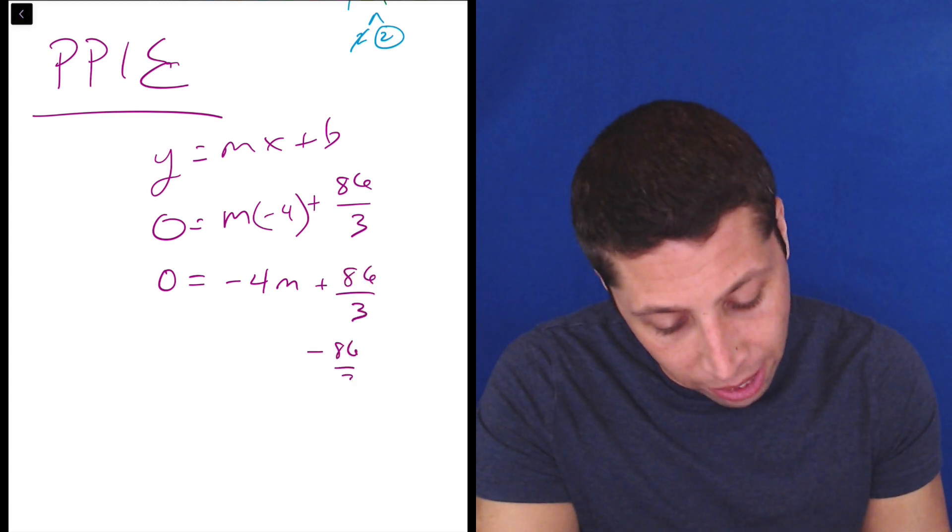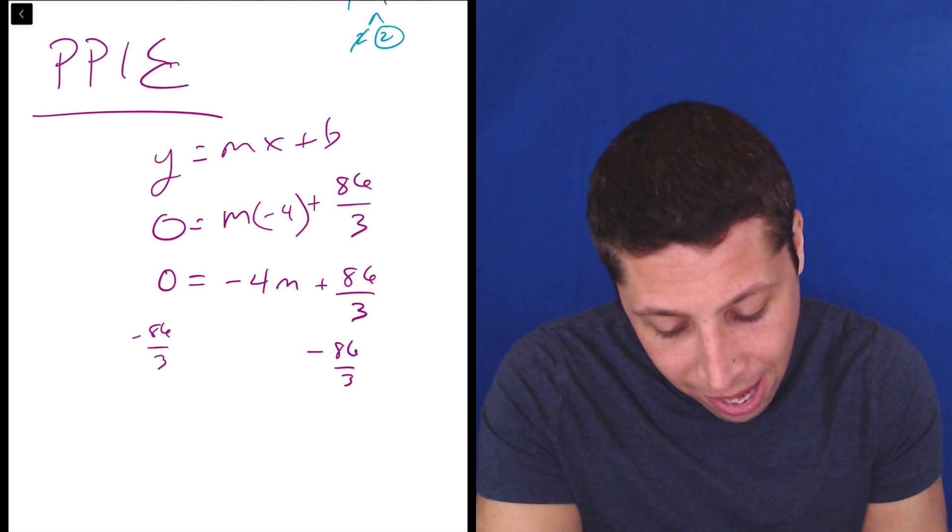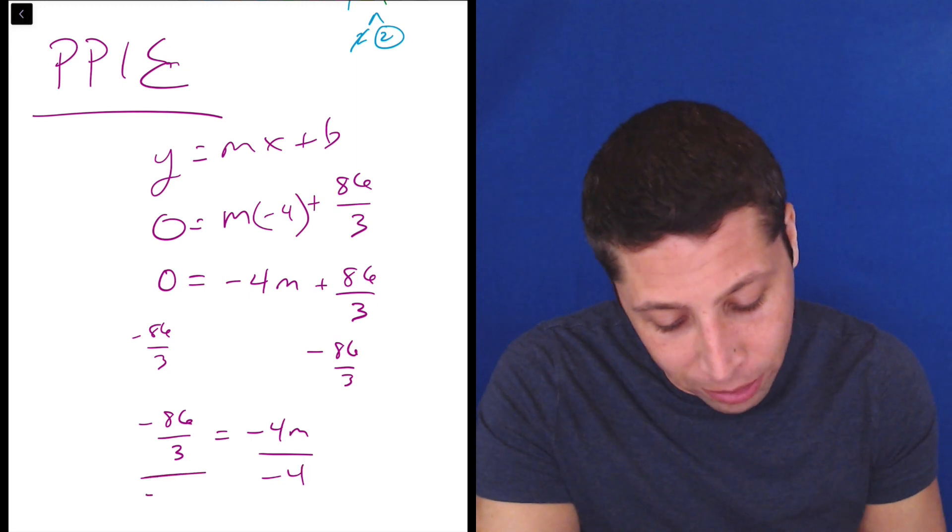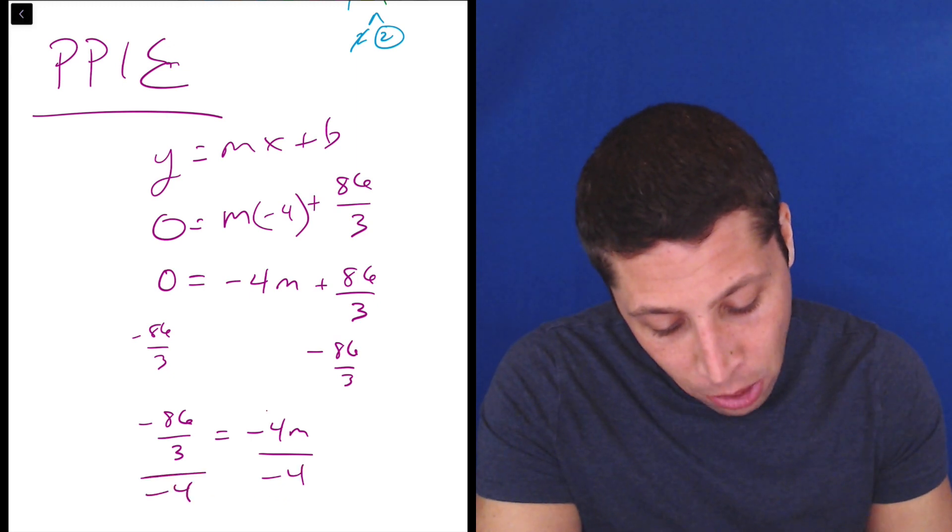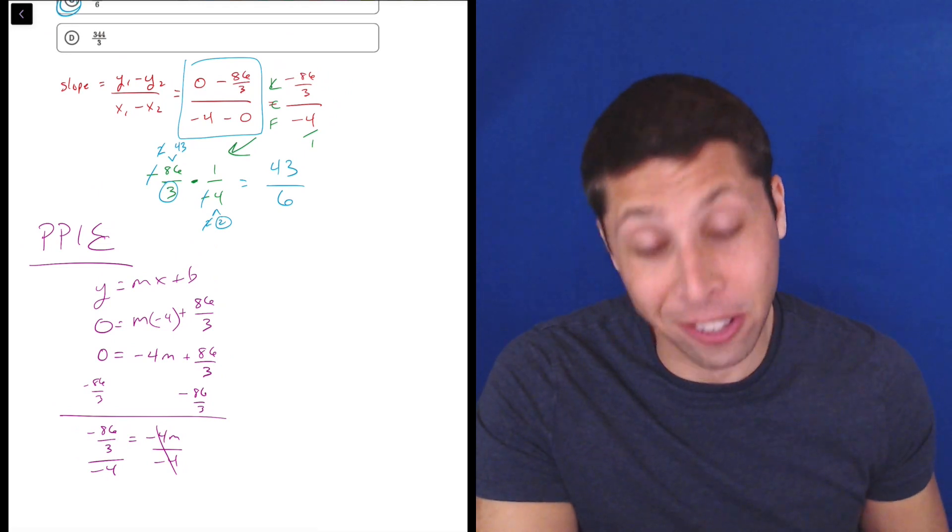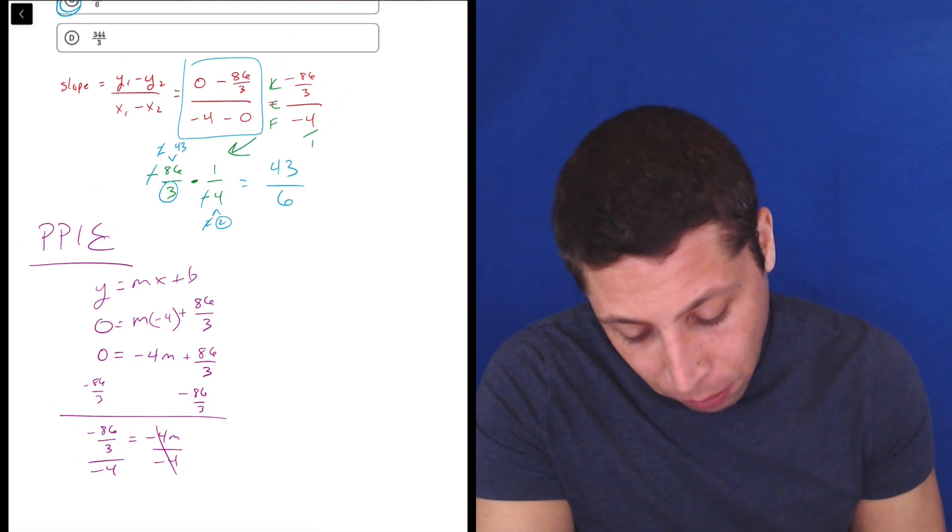So just like that, I kind of end up with something very similar to what math I did before. I have 0 is equal to negative 4m plus 86 thirds. So we could subtract 86 thirds from both sides. We'd have negative 86 thirds is equal to negative 4m. And then, look, we'd end up dividing by negative 4, which is kind of exactly what we did before. We had negative 86 thirds divided by negative 4. But for whatever reason, I think it's just me, but at this stage here, I'm more inclined to just go to Desmos and let it handle it.